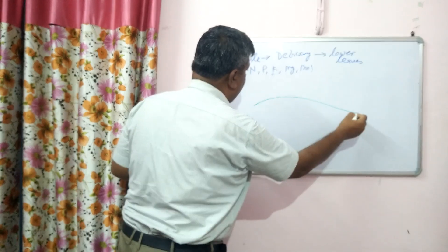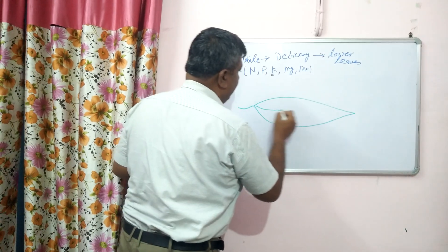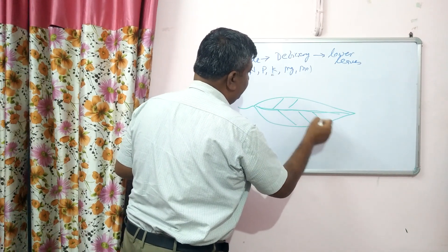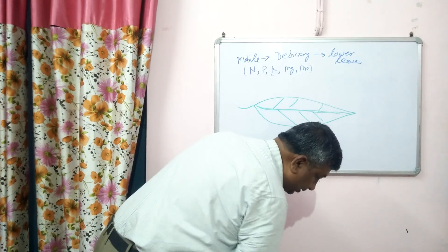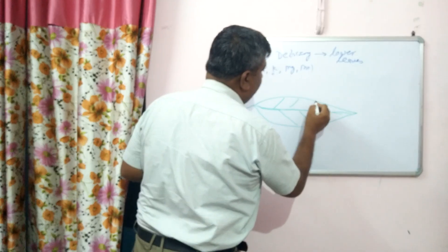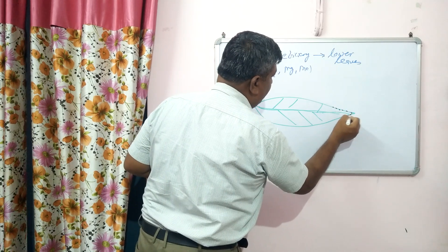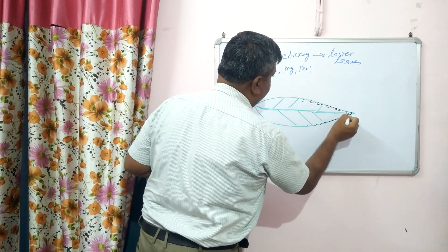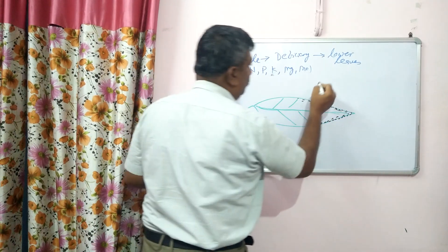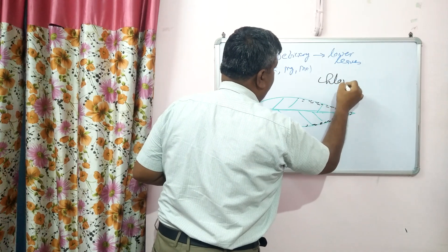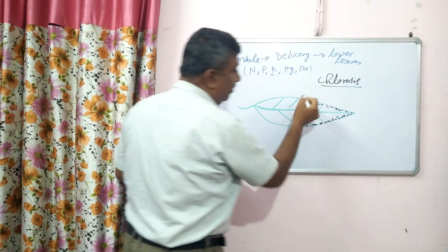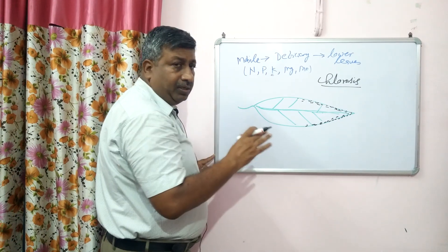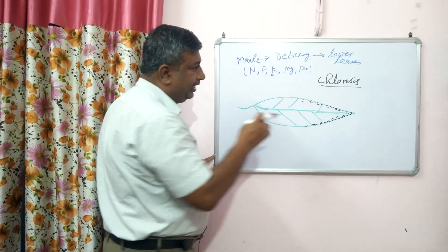On the older leaves, considering the midrib and veins of the leaf, potassium deficiency first occurs on the margins. Yellowing starts on the margins — this is a very peculiar characteristic. Yellowing means loss of chlorophyll, so chlorosis is the first symptom. In potassium deficiency, chlorosis first appears on the margins of older leaves, and yellowing begins at the tips.